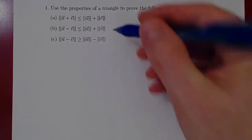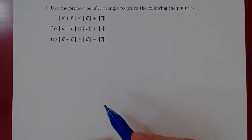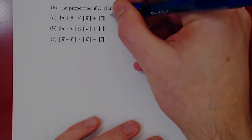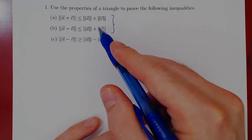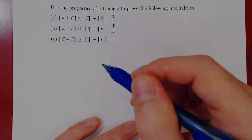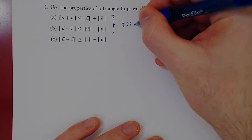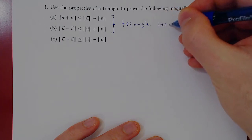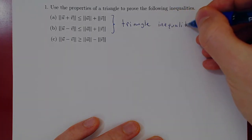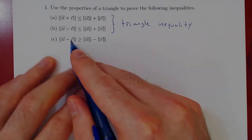In this video, we want to consider the following three inequalities regarding the norm of a sum or difference of vectors. The first two are called the triangle inequality — we'll see that as soon as we prove the first one, the second one follows directly. The third one is called the reversed triangle inequality.